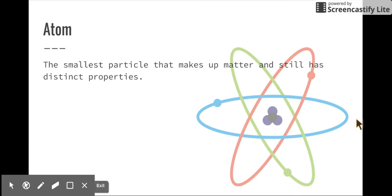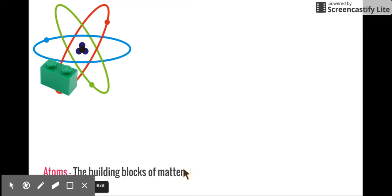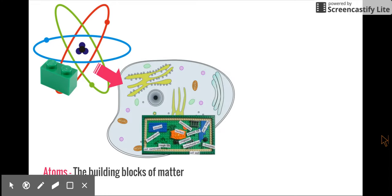By definition, the atom is the smallest particle that makes up matter and still has distinct properties. There are things smaller than the atom, but the atom in its entirety is the smallest particle that makes up matter with distinct properties. The word 'atom' comes from a term meaning 'not to be cut' — it's indivisible. Atoms are the building blocks of matter, kind of like Legos, which can build anything.